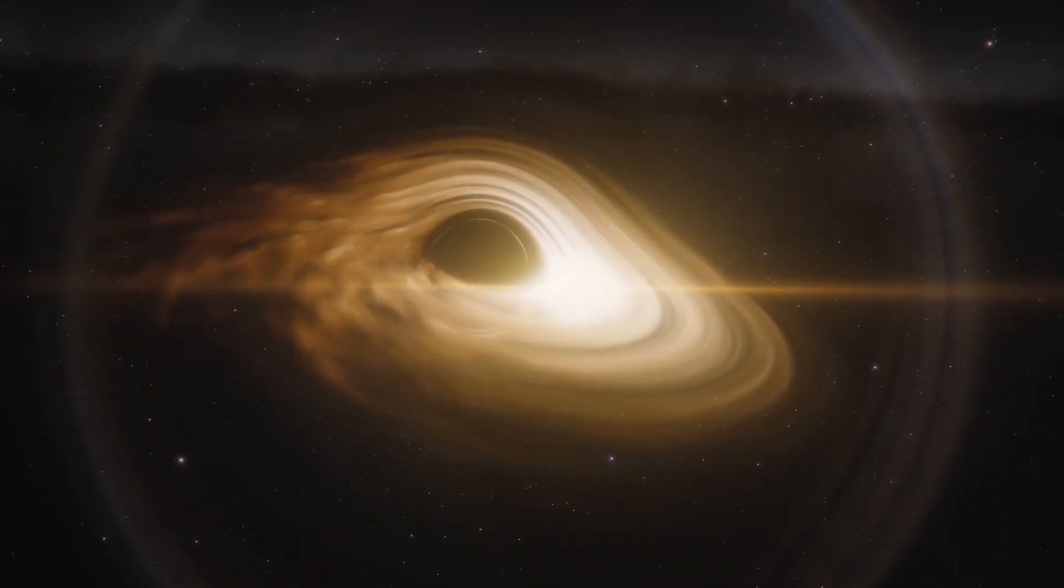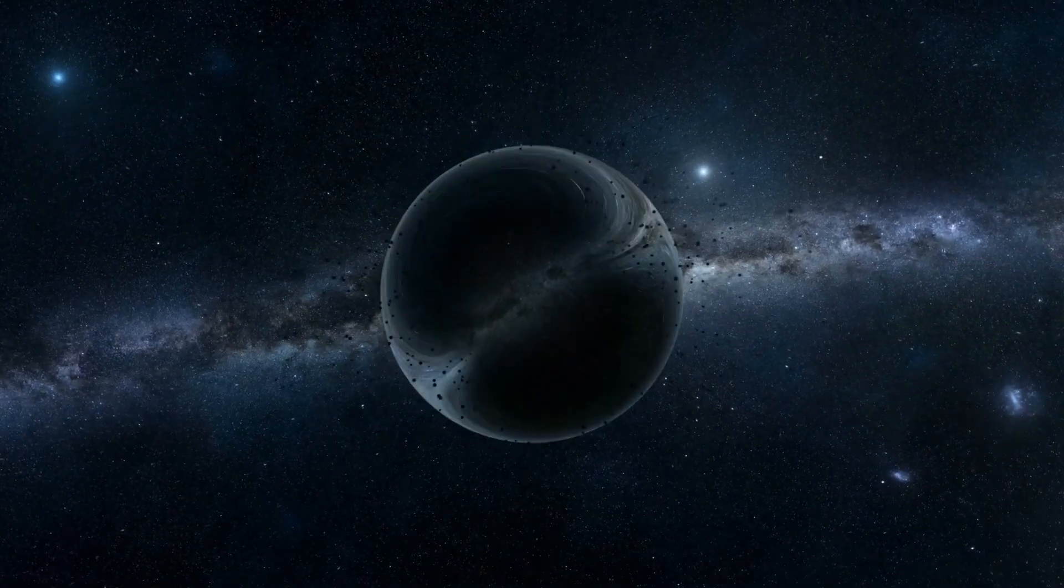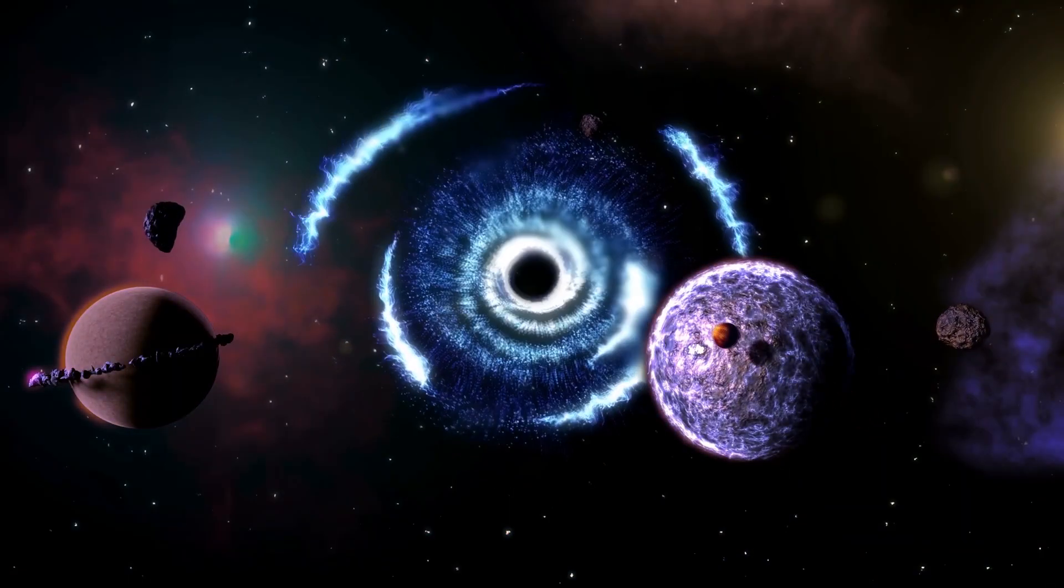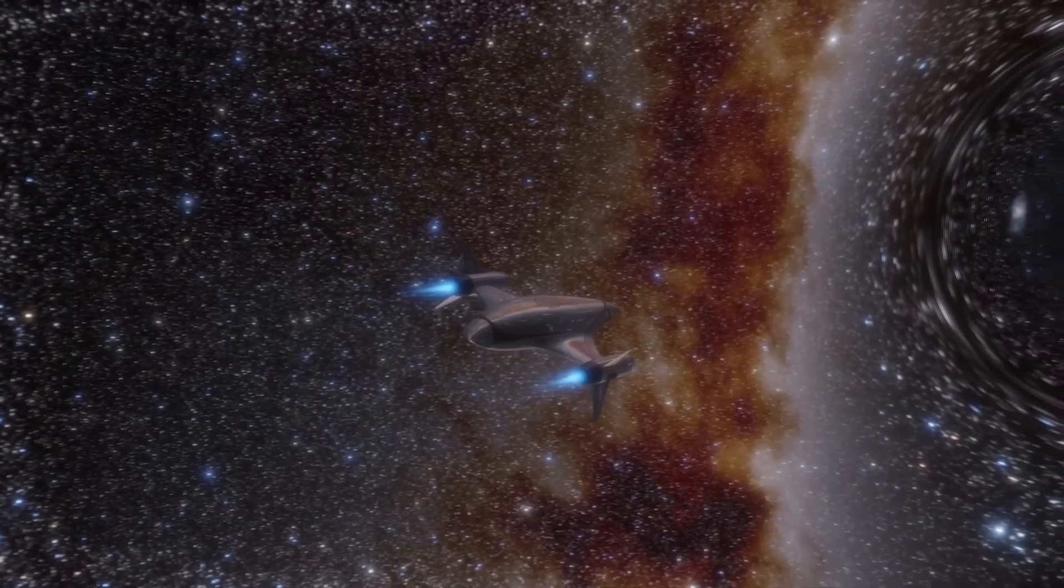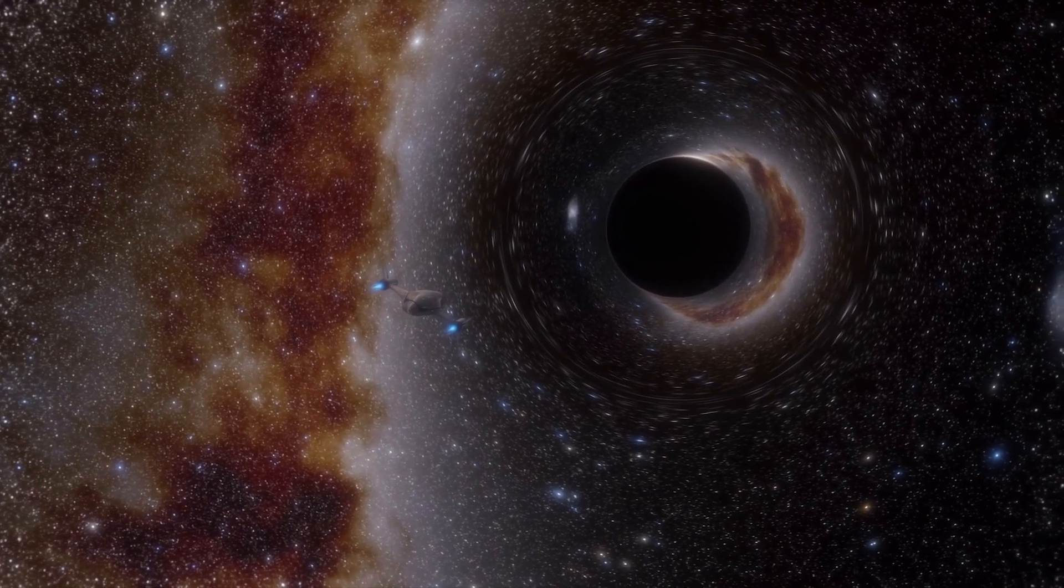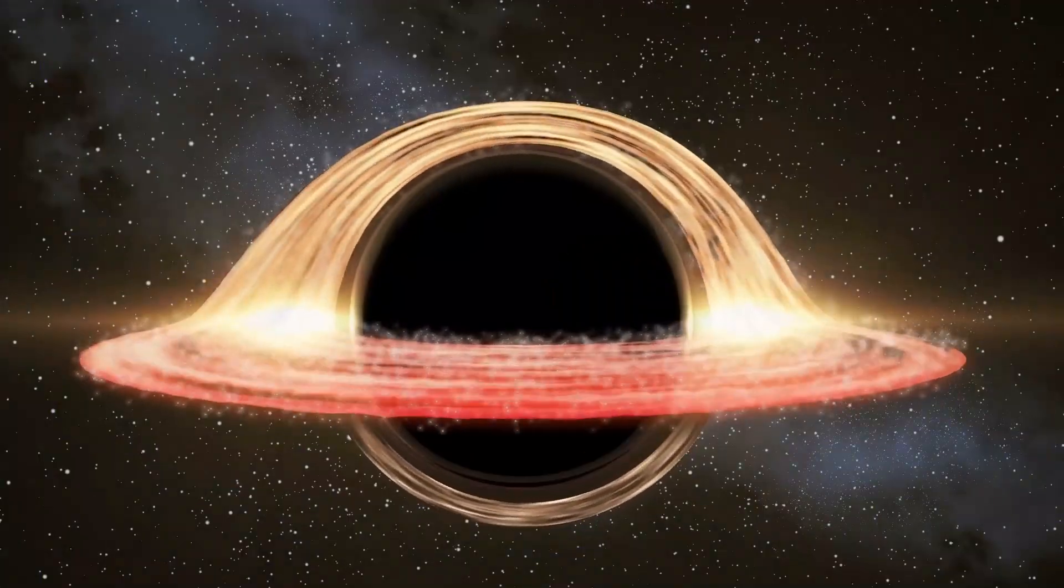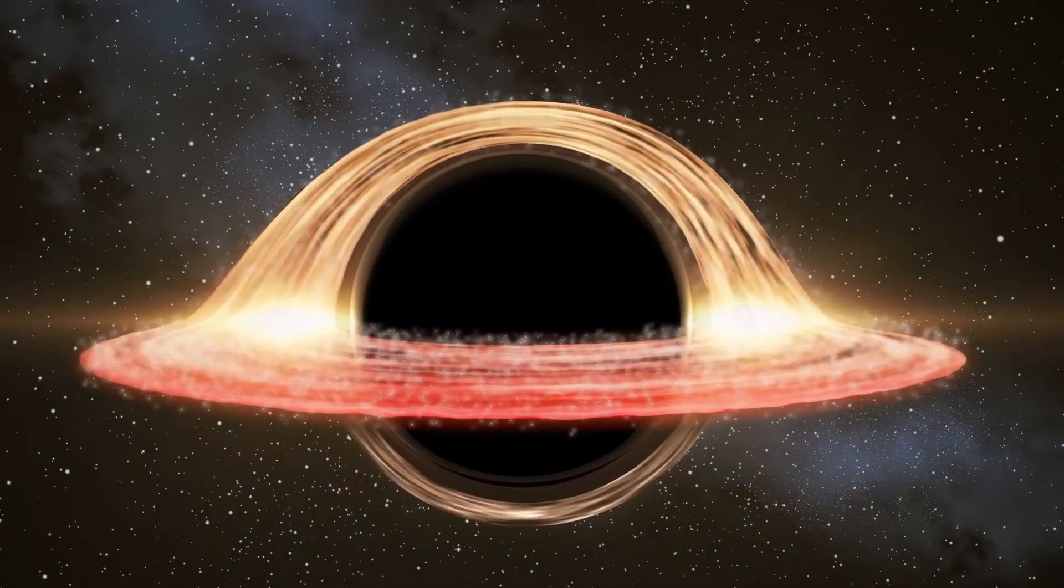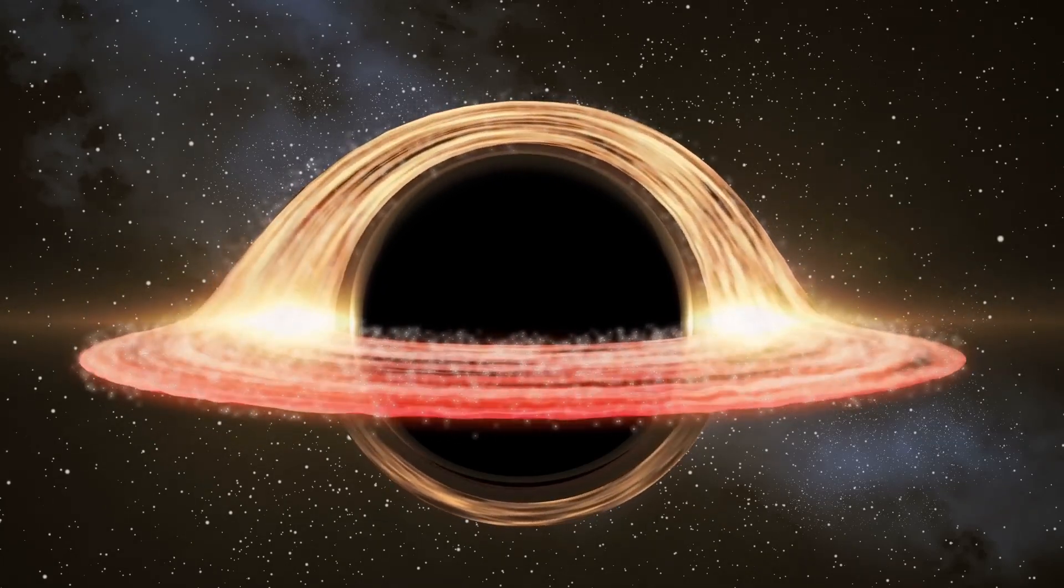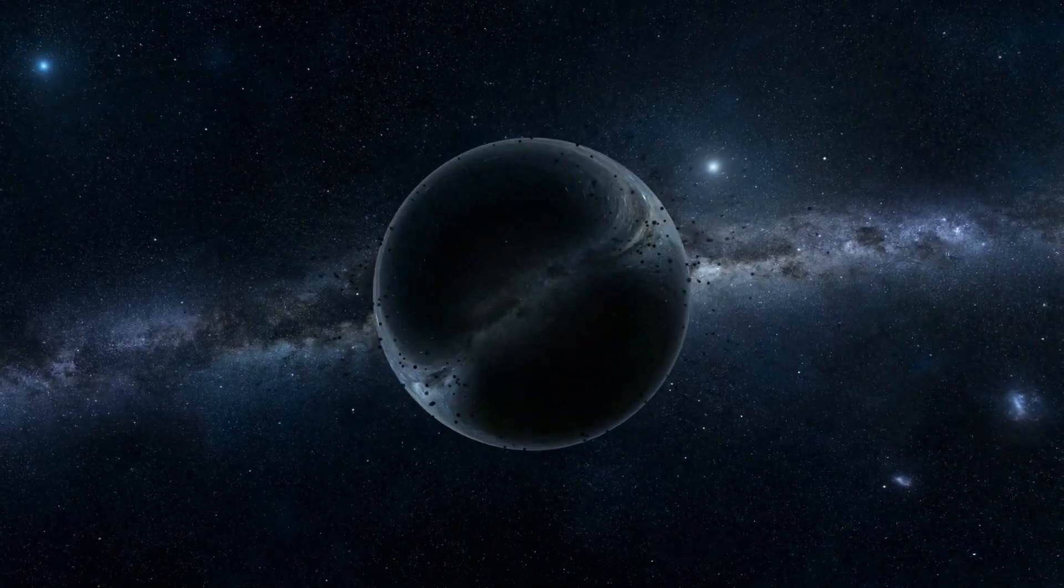However, if a stable Einstein-Rosen bridge existed, it would mean that black holes are not only cosmic devourers, but also portals that could connect us to other regions of space-time. The question then arises whether we could use a wormhole to travel through space and time. Although this is still the subject of speculation and its feasibility has not yet been demonstrated, the theoretical possibility of wormholes opens the door to exploring fascinating concepts about interstellar travel and the connection between different parts of the universe.